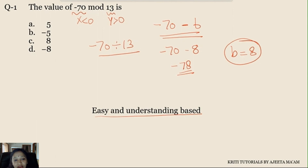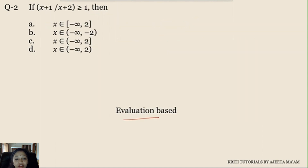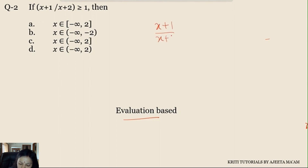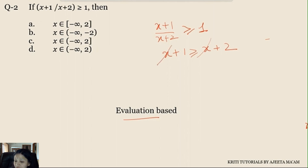The next question is again based on the same unit but from the topic of numerical inequalities. It's evaluation-based — solving a linear inequality is just like solving equations. Now, for the inequality x+1 upon x+2 ≥ 1, if you simply cross-multiply by x+2, then x gets cut and you get 1 ≥ 2, which cannot be the answer. So this is not what we have to do.